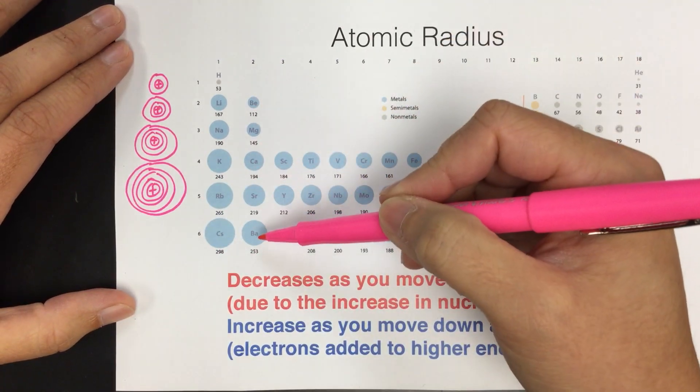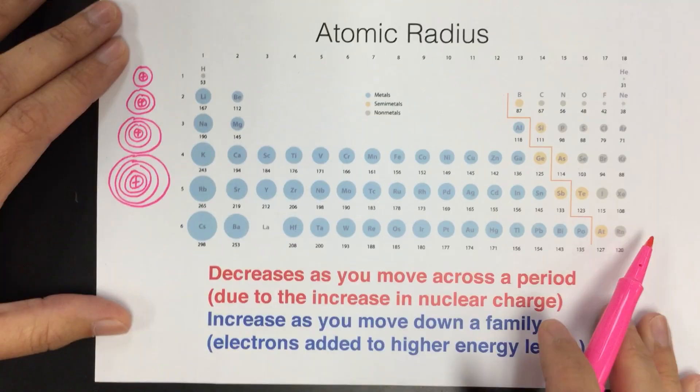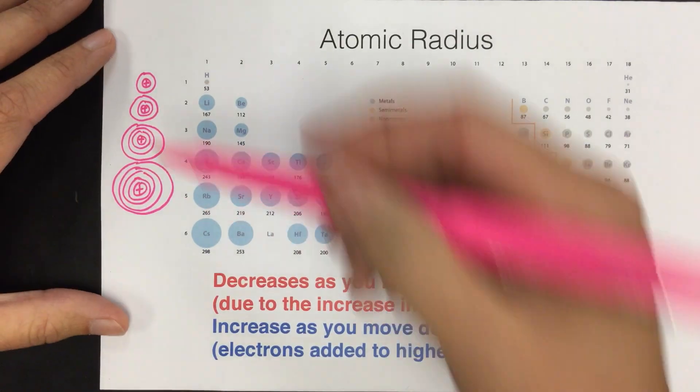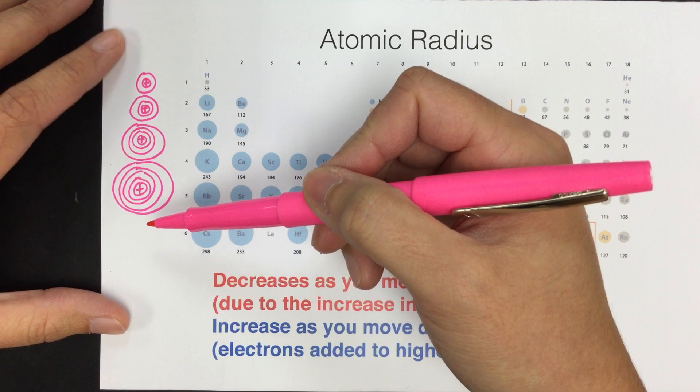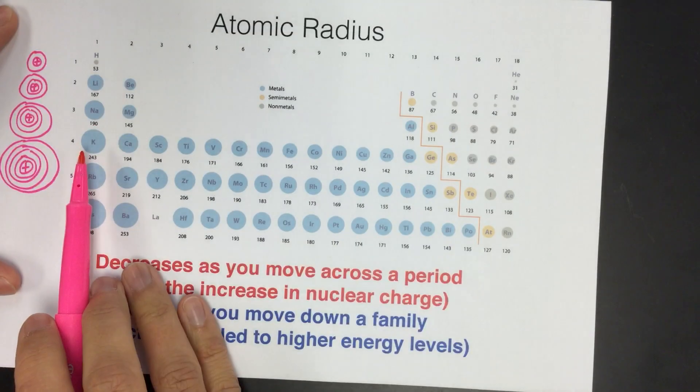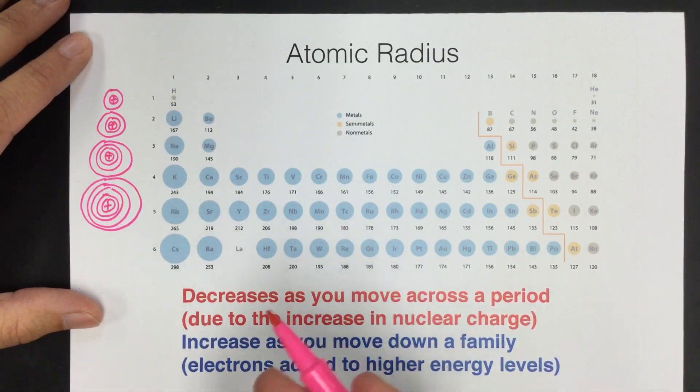So within each of the families, as we go down, they get bigger because electrons are being added to higher energy levels. Okay, so that one should actually make more sense. The trend as we go down, adding energy levels makes the atom get bigger. The one that's trickier is as we go across, the electrons are getting added to the same energy level.